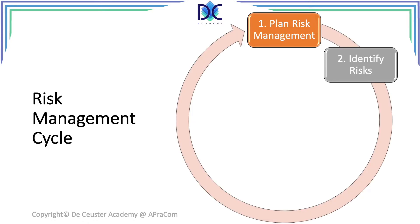The next step in the process is about risk identification. In this step we will identify the risks, both threats and opportunities. Each risk will be characterized, which includes a short description of the risk, the impact, the probability, the time horizon, and other relevant parameters as described in the risk management planning. Once the risks have been identified and characterized, we will conduct the risk qualification. Here we will evaluate the risks based on impact and probability, and identify the risks that will have to be quantified, monitored and accepted.